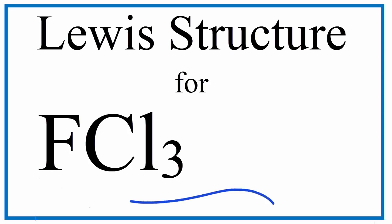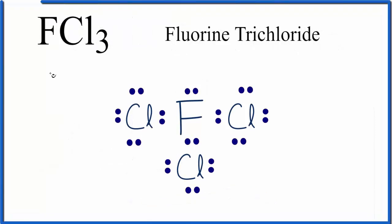To draw the Lewis structure for FCl3, we've got a bit of a problem here. If you count the valence electrons up, there are a total of 28 valence electrons for the FCl3 Lewis structure.